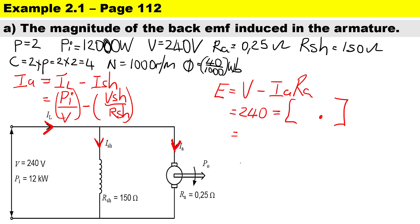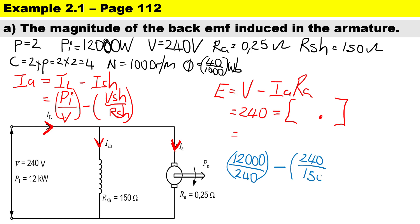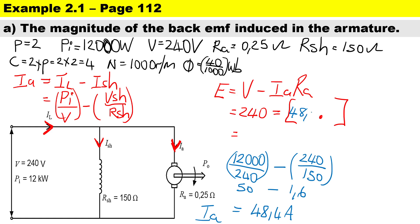The line current is 12,000 watts divided by 240 volts, which equals 50 amps. The shunt current is 240 divided by 150 ohms, which equals 1.6 amps. Therefore, the armature current I_a = 50 − 1.6 = 48.4 amps.